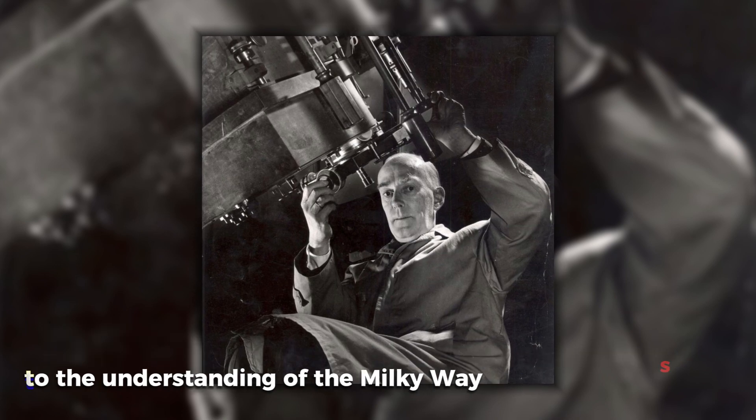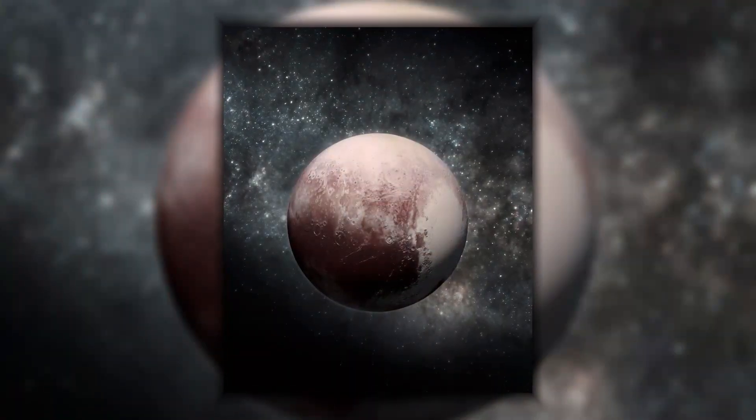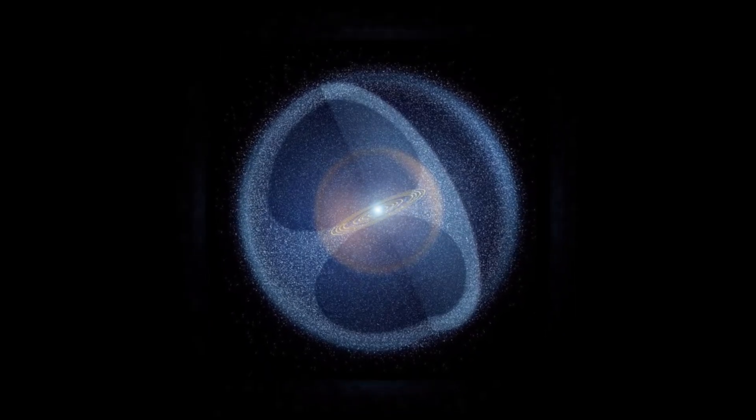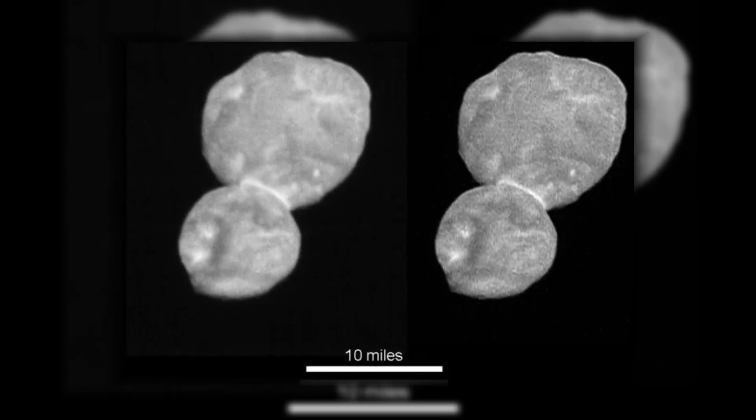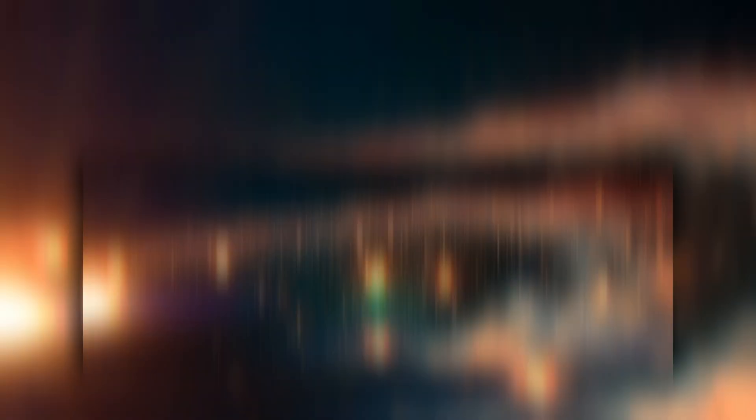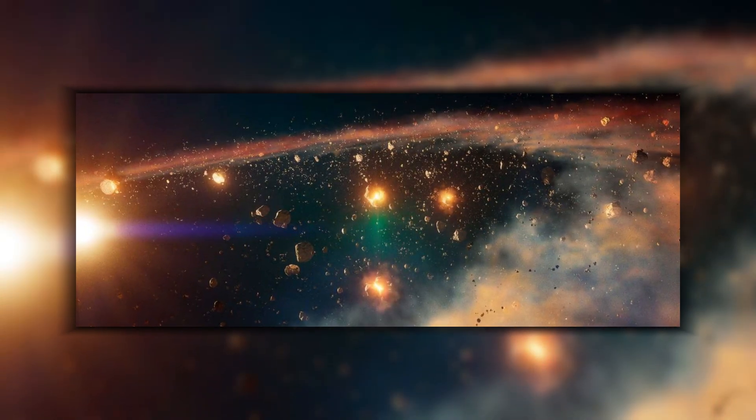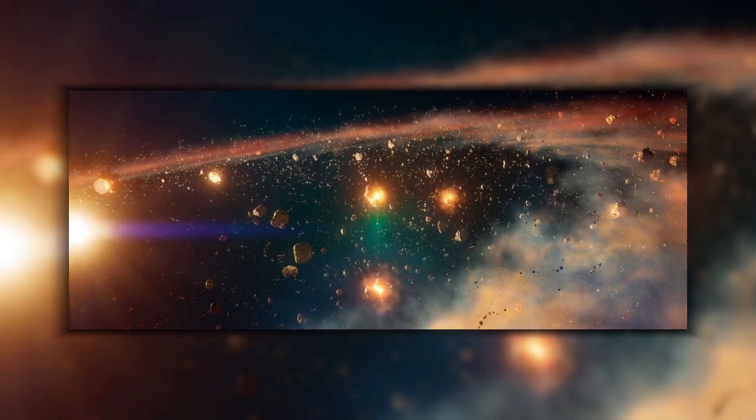Situated far beyond Neptune and Pluto, the Oort Cloud's immense distance renders it difficult to observe directly, making much of its nature speculative. It is believed to consist of billions, possibly trillions of icy objects, remnants from the early solar system, existing in a spherical shell around our solar system.